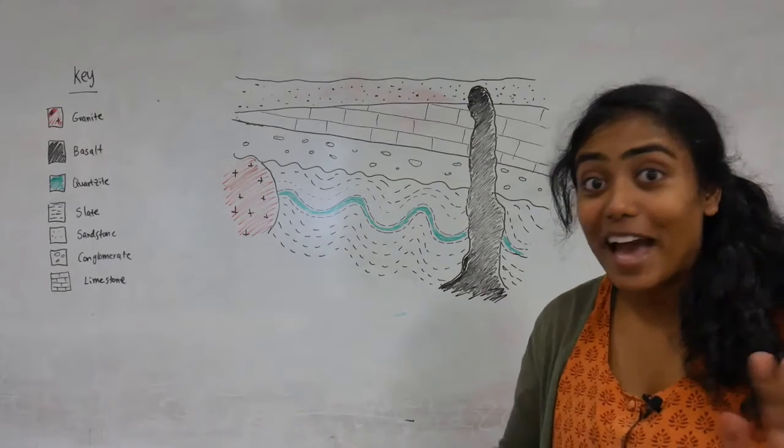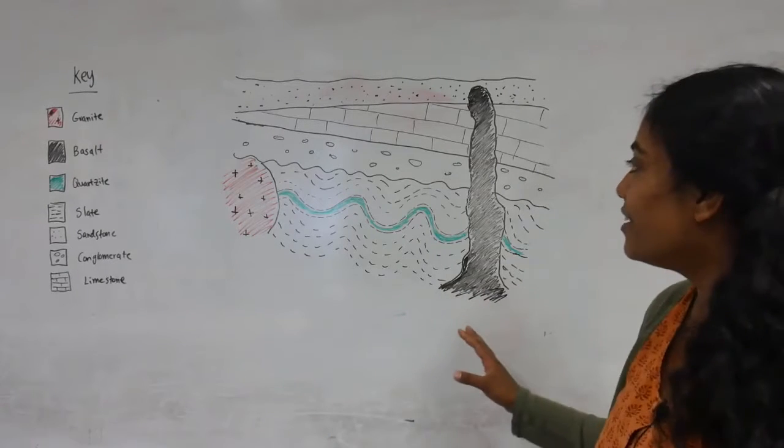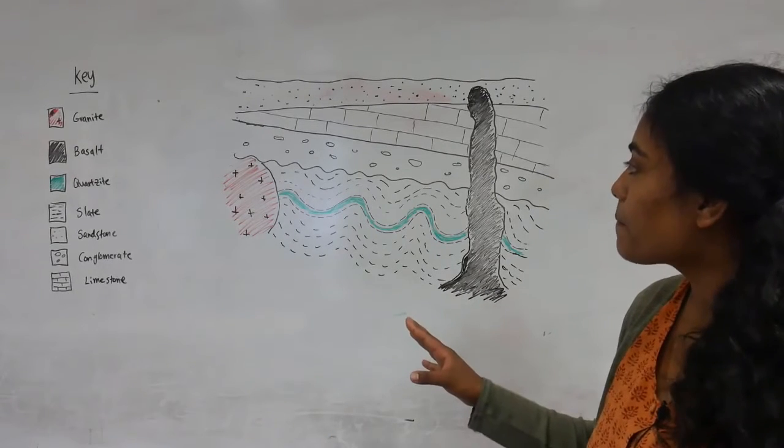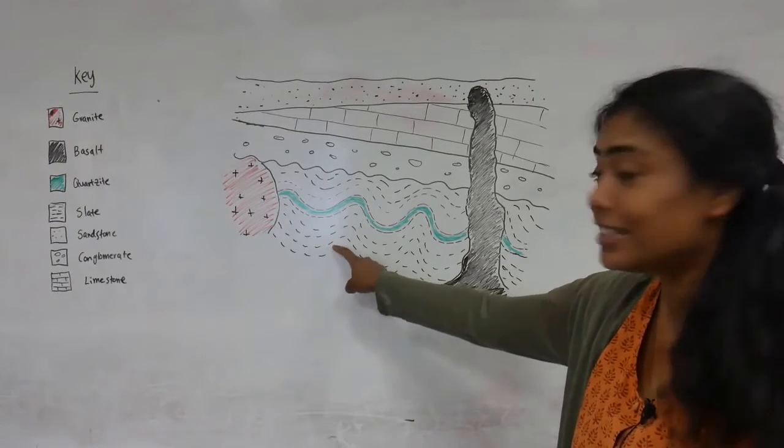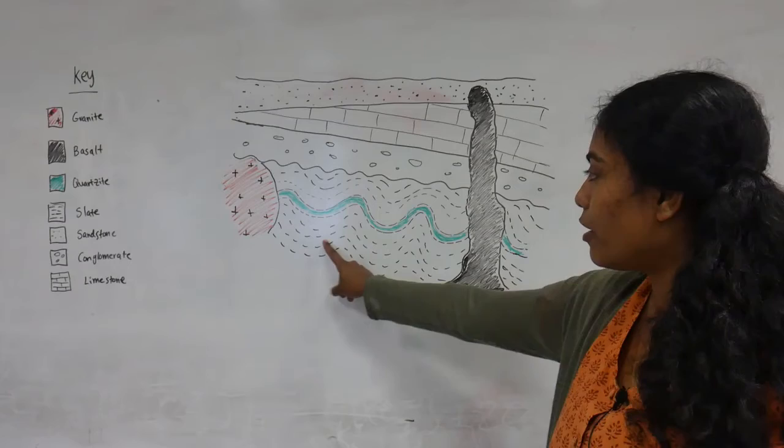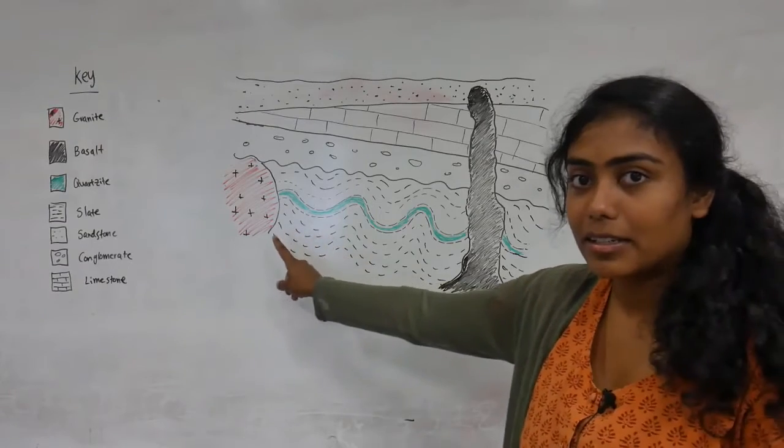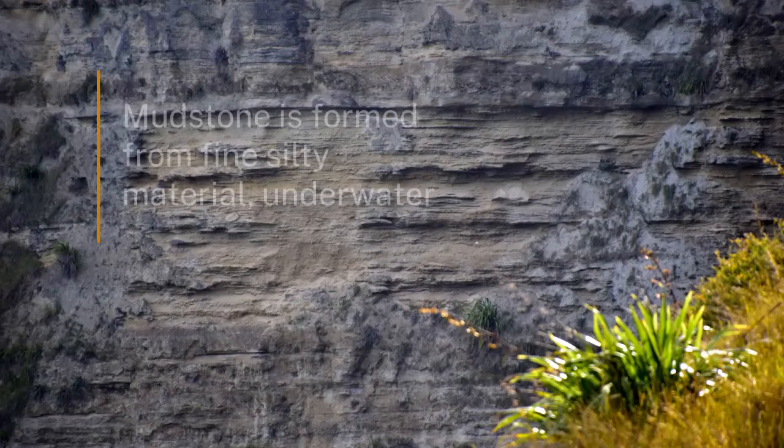I'll now go through the answer of what happened here. So basically down here we have a slate. This would have started off as something like a mudstone deposited underwater.